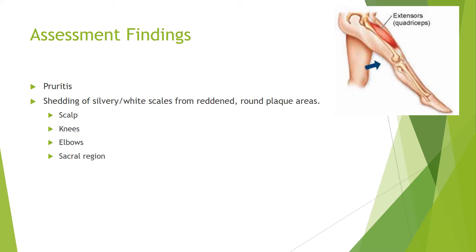When assessing a patient with psoriasis, you'll find several things. Itching is the first thing you'll find, as well as shedding of silvery white scales from red and brown plaque areas. These often include the scalp, knees, elbows, sacral regions, as well as the extensor regions of the arms and legs — basically the top of the thigh and the back of the arm.